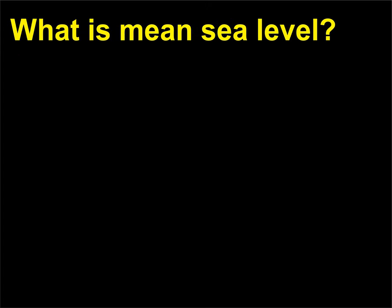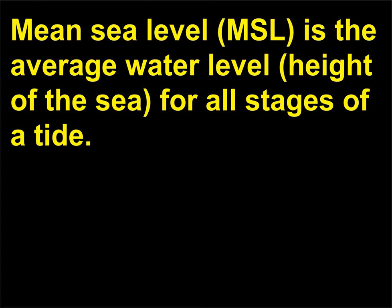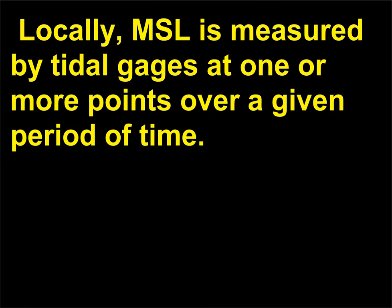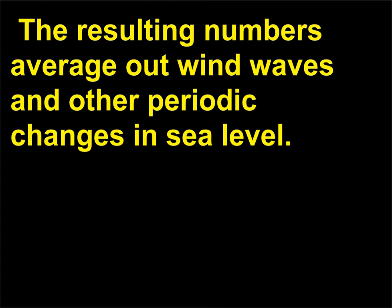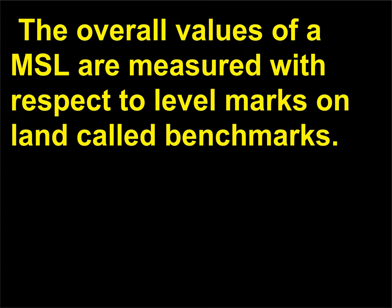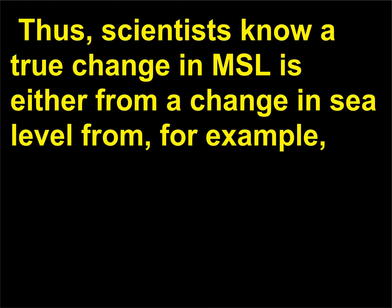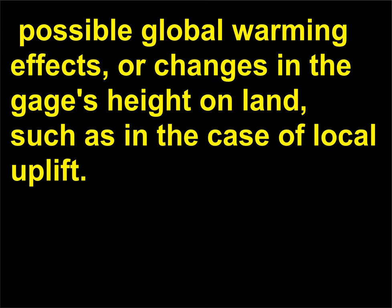What is mean sea level? Mean sea level (MSL) is the average water level — height of the sea — for all stages of a tide. Locally, MSL is measured by tidal gauges at one or more points over a given period of time. The resulting numbers average out wind waves and other periodic changes in sea level. The overall values of MSL are measured with respect to level marks on land called benchmarks. Thus, scientists know a true change in MSL is either from a change in sea level — for example, from possible global warming effects — or changes in the gauge's height on land, such as in the case of local uplift.